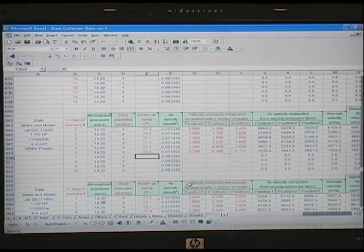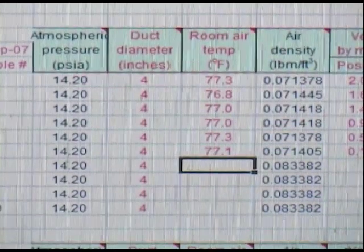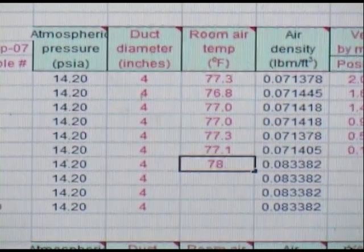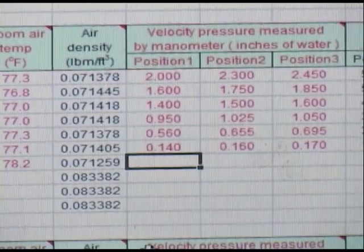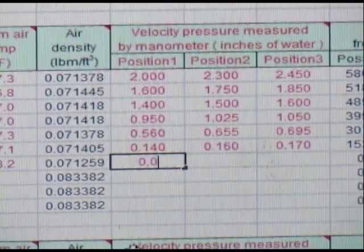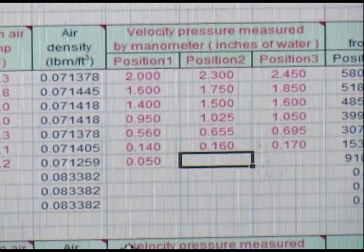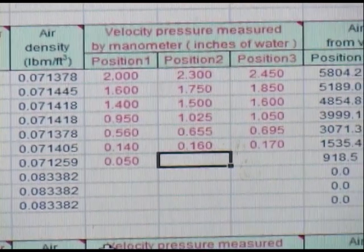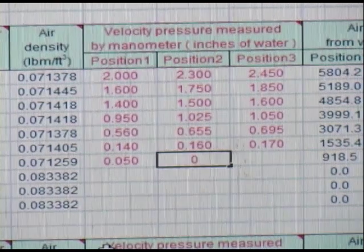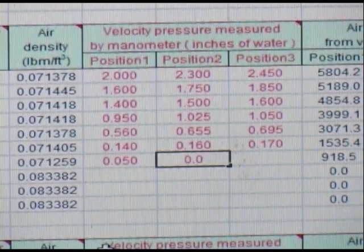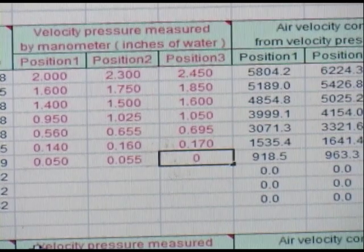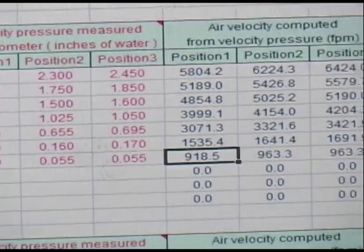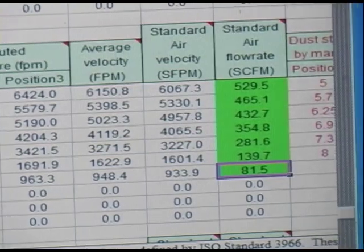For this test, we took readings at room temperatures to find out what the air temperature was during the tests. And then we read the velocity pressures in three different positions and recorded those. And we used the spreadsheet formulas to calculate the standard air flow CFM from those readings.